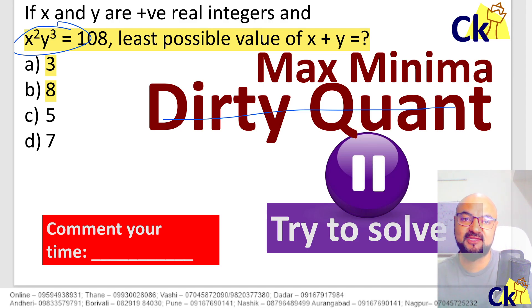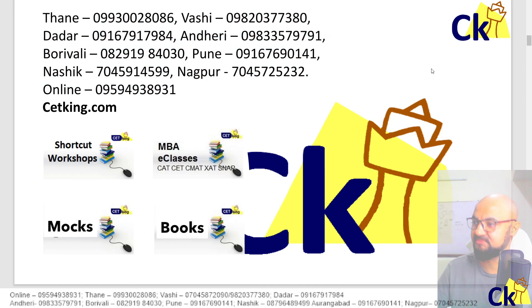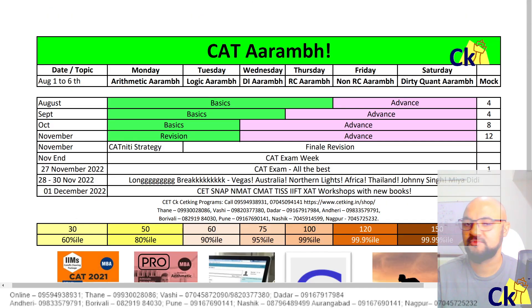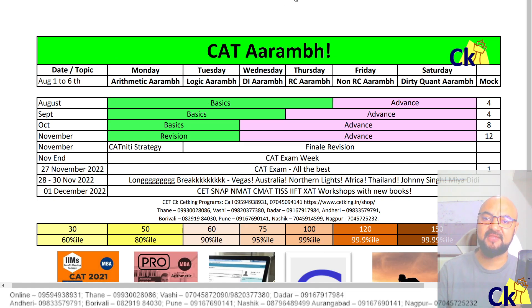It is a free workshop, CAT Aarambh. You can call or WhatsApp any of the numbers given here to attend the workshop. They will send you the Zoom ID where you can attend. So today's workshop is at 8:15 pm. Monday, Tuesday, Wednesday, Thursday. Every day I am going to pick up one topic and we are going to complete that topic from the CAT point of view. Complete.